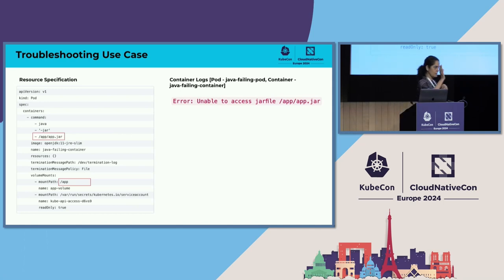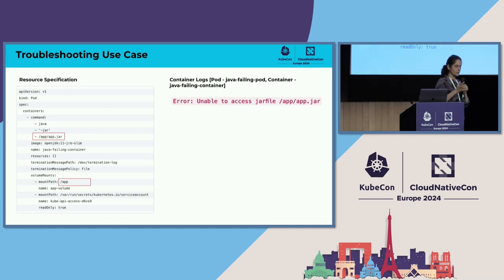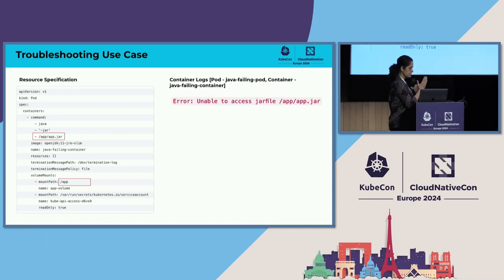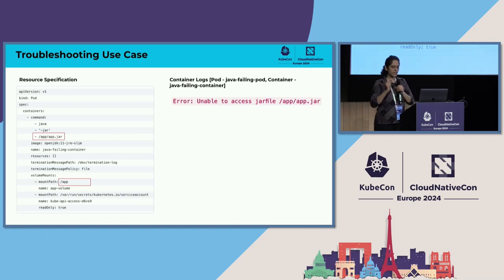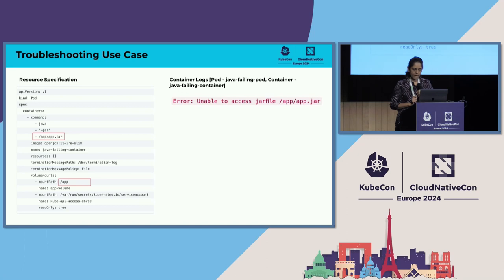So to summarize what we have seen: we have seen the prompt, we have seen the models, and we have seen the workflow or the governance. Now I'm going to do a simple use case of how we go about troubleshooting an issue in Kubernetes and how the AI solution can help. I have a simple resource — a Java application deployed as a pod — and it actually has a command to run app.jar, which is not present in the image. There is a volume mount that mounts that jar file into the container. Since the jar file is not there, the container doesn't start, and it has an error: unable to access the jar file.